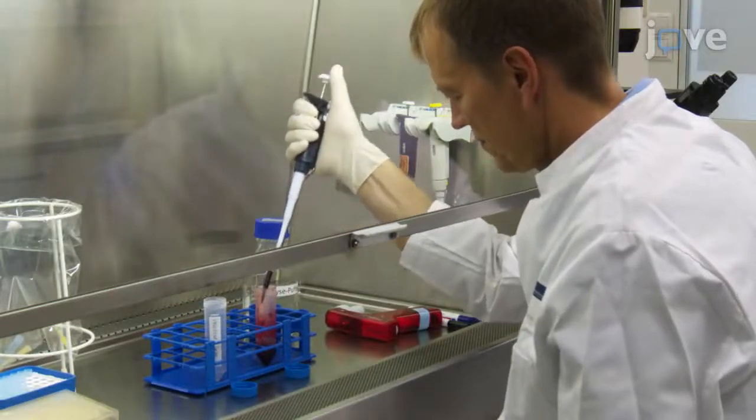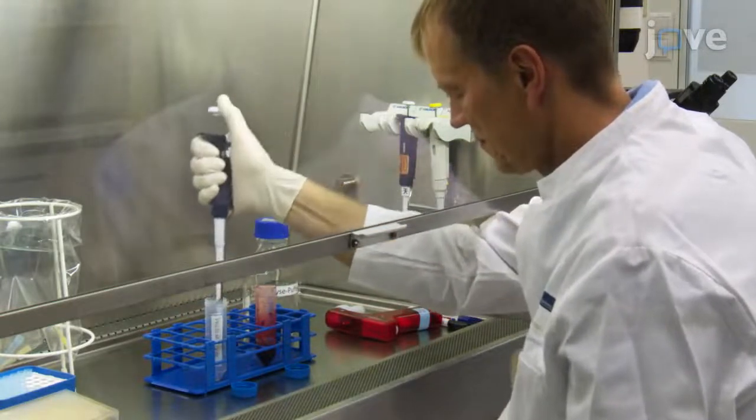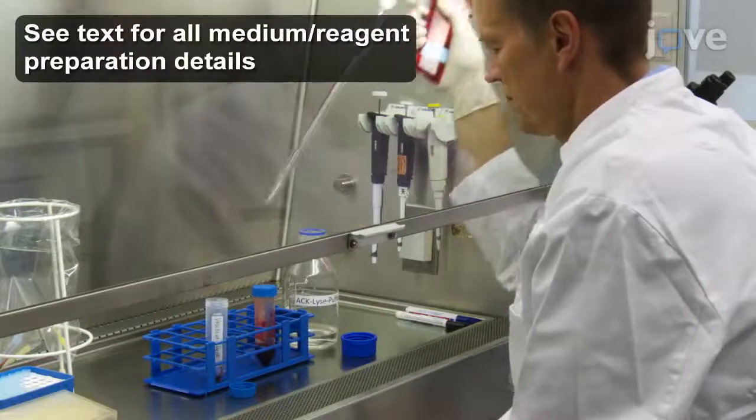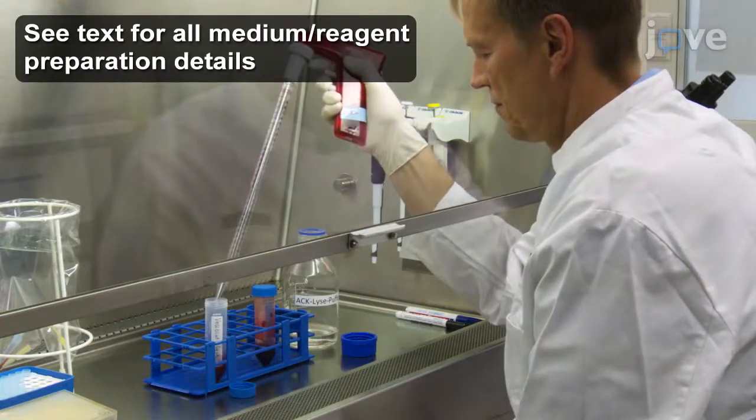Begin by mixing 1 milliliter of freshly drawn human peripheral blood with 30 milliliters of ACK lysis buffer in a 50 milliliter conical tube.